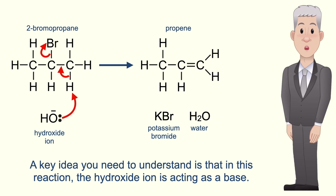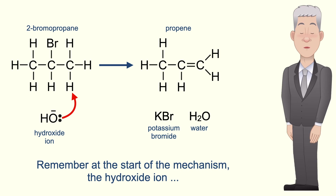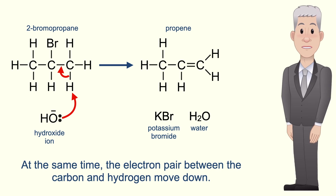A key idea you need to understand is that in this reaction the hydroxide ion is acting as a base. Remember at the start of the mechanism the hydroxide ion forms a covalent bond to a hydrogen in the haloalkane, and at the same time the electron pair between the carbon and hydrogen move down.